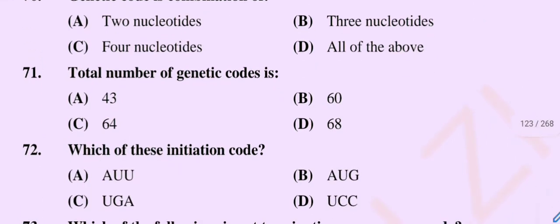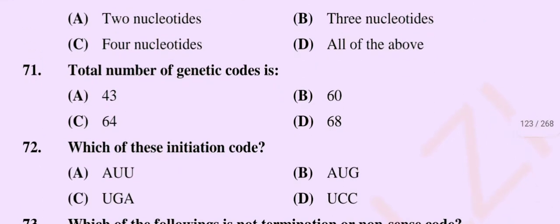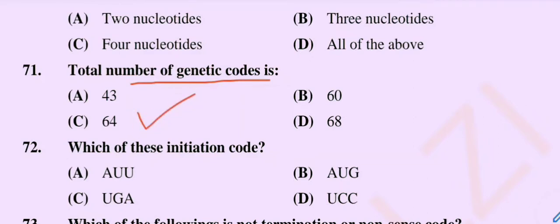Question number 71: Total number of genetic codes is — Option A: 43, Option B: 60, Option C: 64, Option D: 68. So the correct option is Option C, 64.